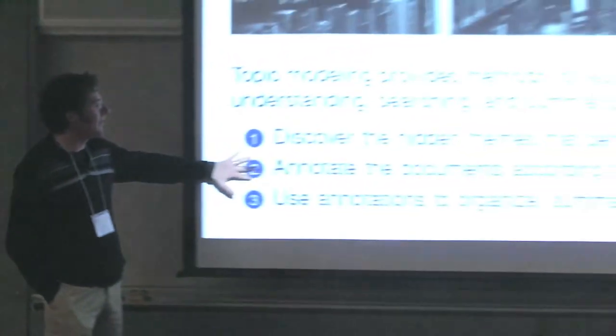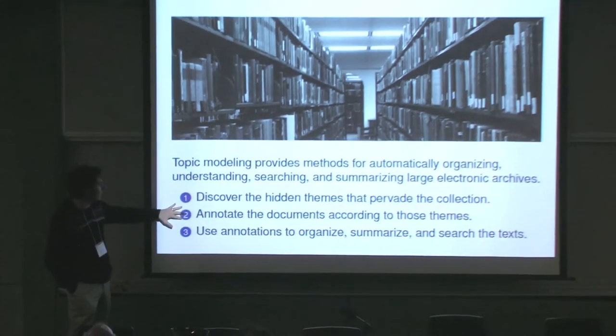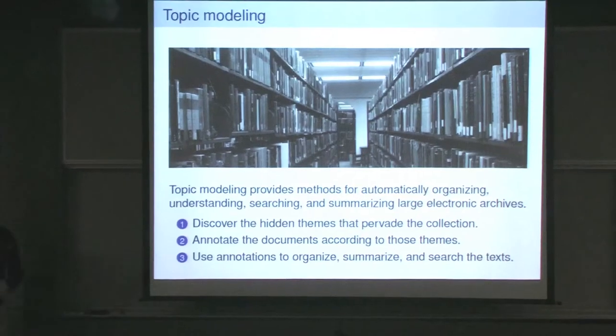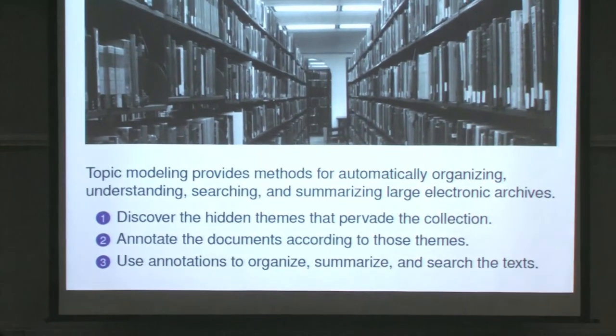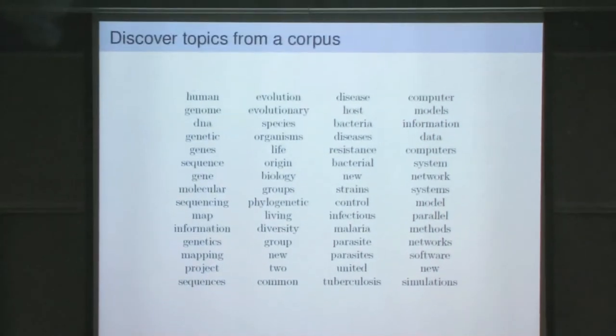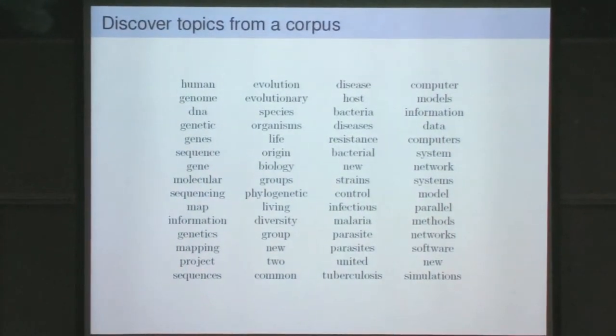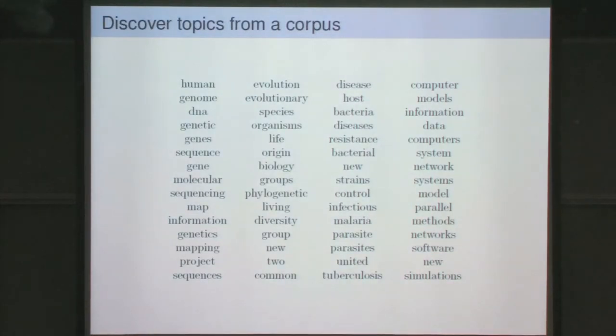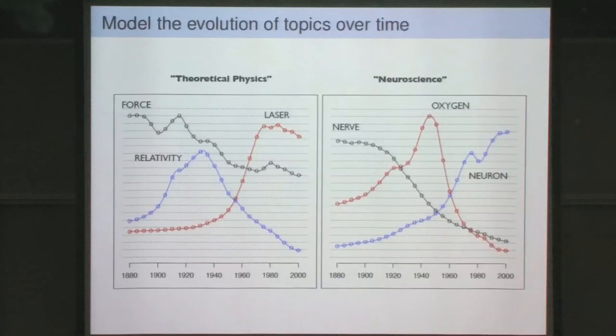The idea is a three-step process. First, we discover the hidden themes that pervade a collection by analyzing the texts themselves. Then we annotate the documents according to those themes, as though there were people annotating the documents. Finally, we use those annotations to help us do whatever we want with our big collection of documents. With a topic model, we can analyze scientific articles and automatically learn groups of words associated together under a single theme.